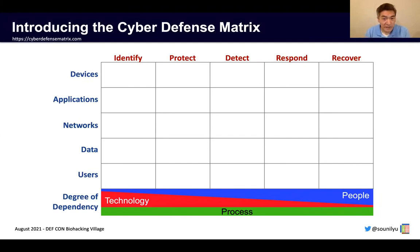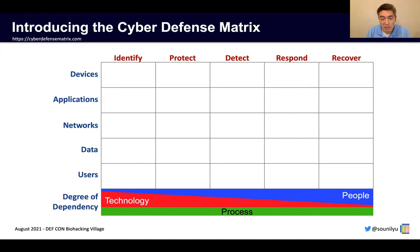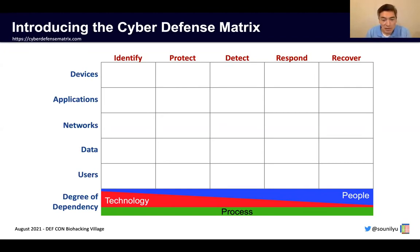When it comes to the functions of identify and protect, we should largely rely upon technology to do the work there. As we move to detect, respond, and recover, what I have found is that despite whatever technologies come our way, we're still heavily dependent upon people to do a lot of the work on the right side of BOOM — which, by the way, is between protect and detect. Throughout all five functions, we have an equal amount of dependence on process, meaning we always have a need for process across all five functions.